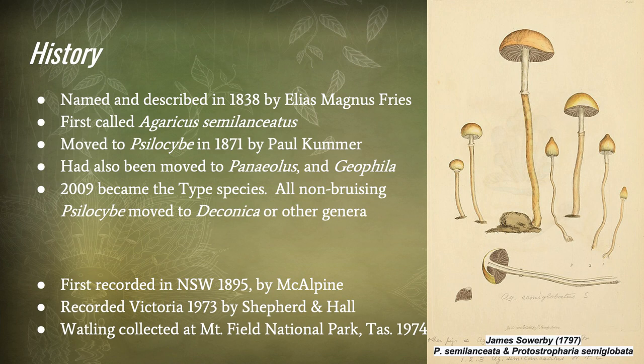The species was first recorded in New South Wales in 1895 by McAlpin. It was recorded in Victoria in 1973 by Shepparton Hall. Roy Watling collected specimens of the species at Mountfield National Park in Tasmania in 1974.